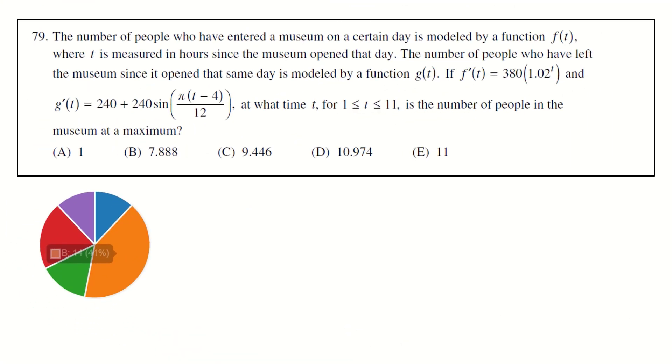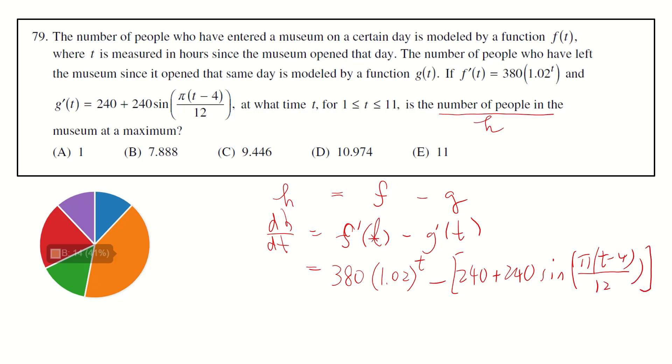Next question 79. This is a GC question. The number of people who've entered a museum on a certain day is modeled by function f(t), where t is measured in hours. The number of people who left the museum is modeled by g. h equals f minus g. So h prime t is f prime t minus g prime t, which equals 380 times 1.02 to the t minus 240 plus 240 sin pi times t minus 4 over 12. t is between 1 and 11. We are asked to find the maximum of h.